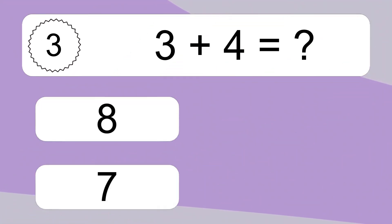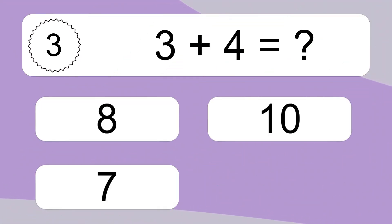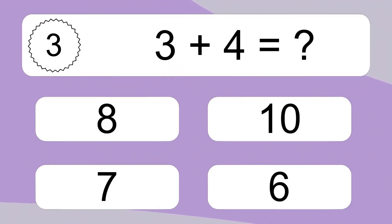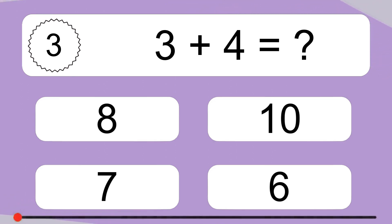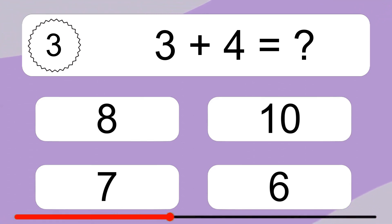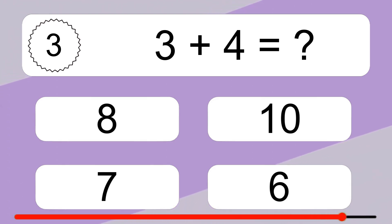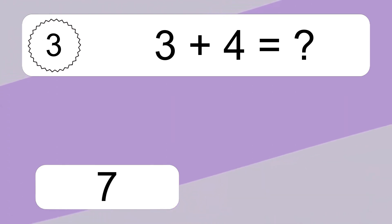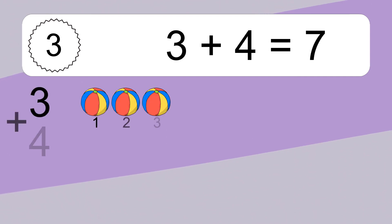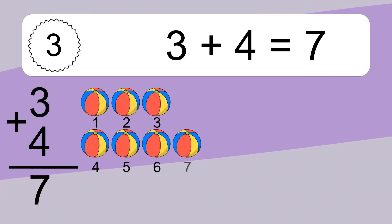3 plus 4 equals what? 3 plus 4 equals 7.